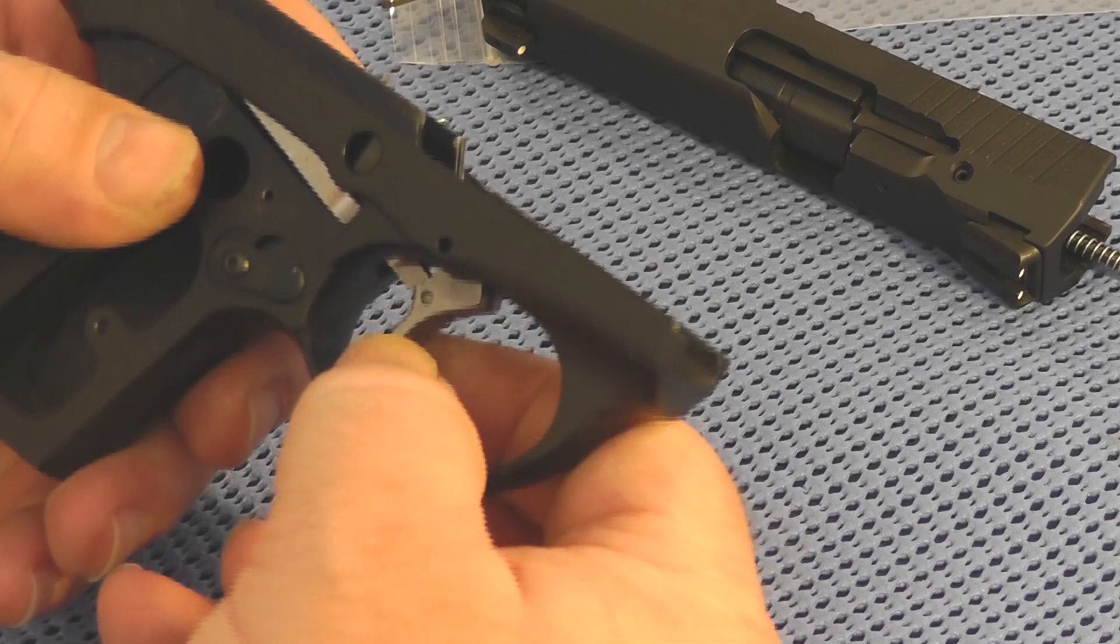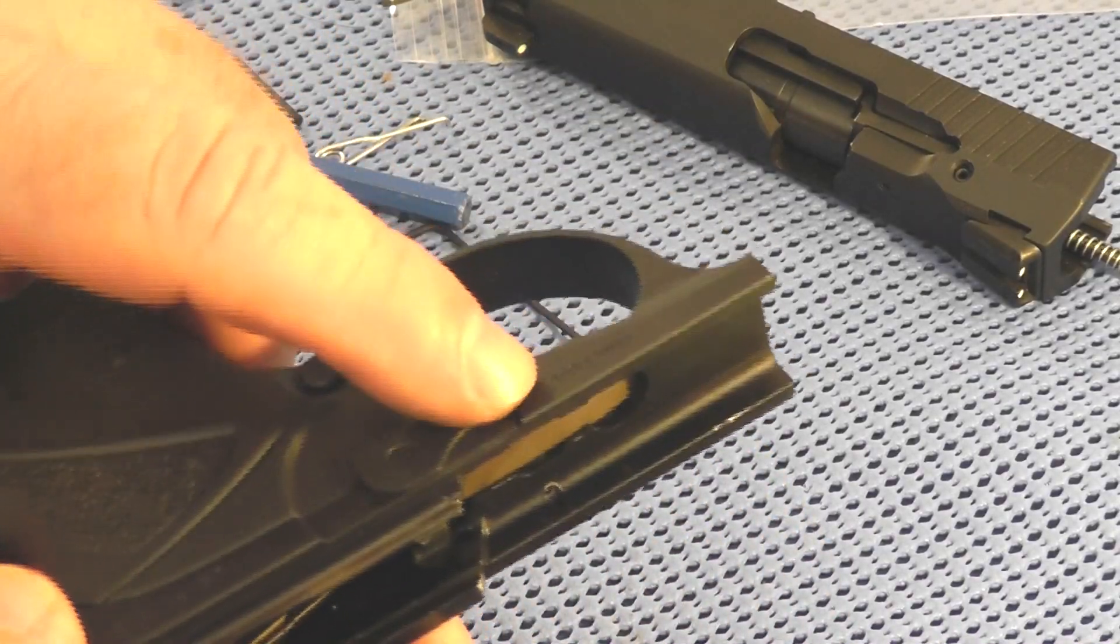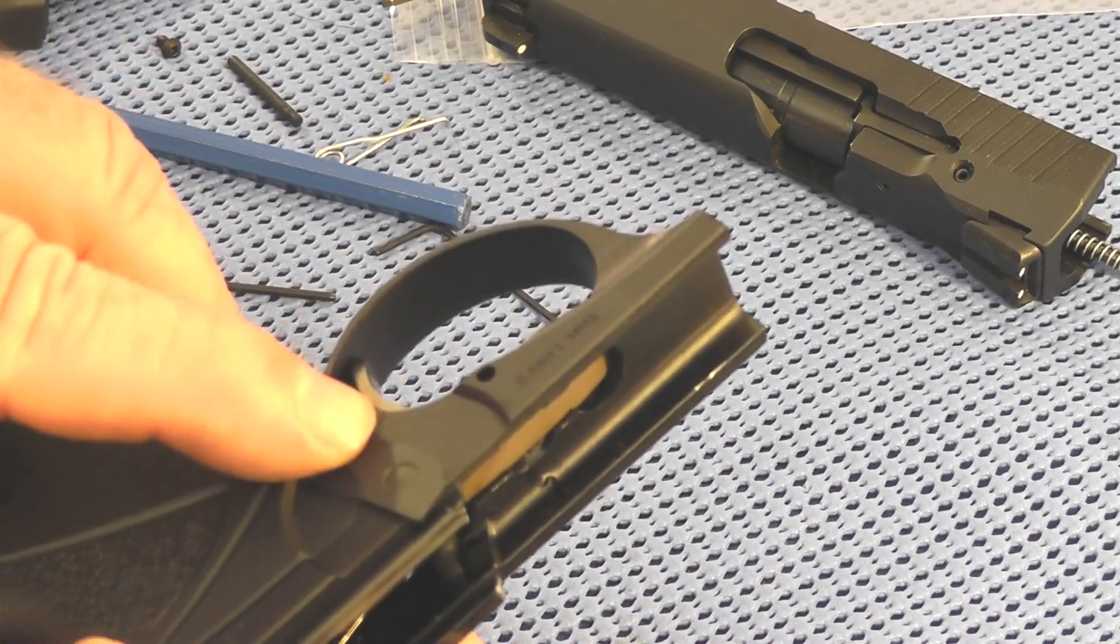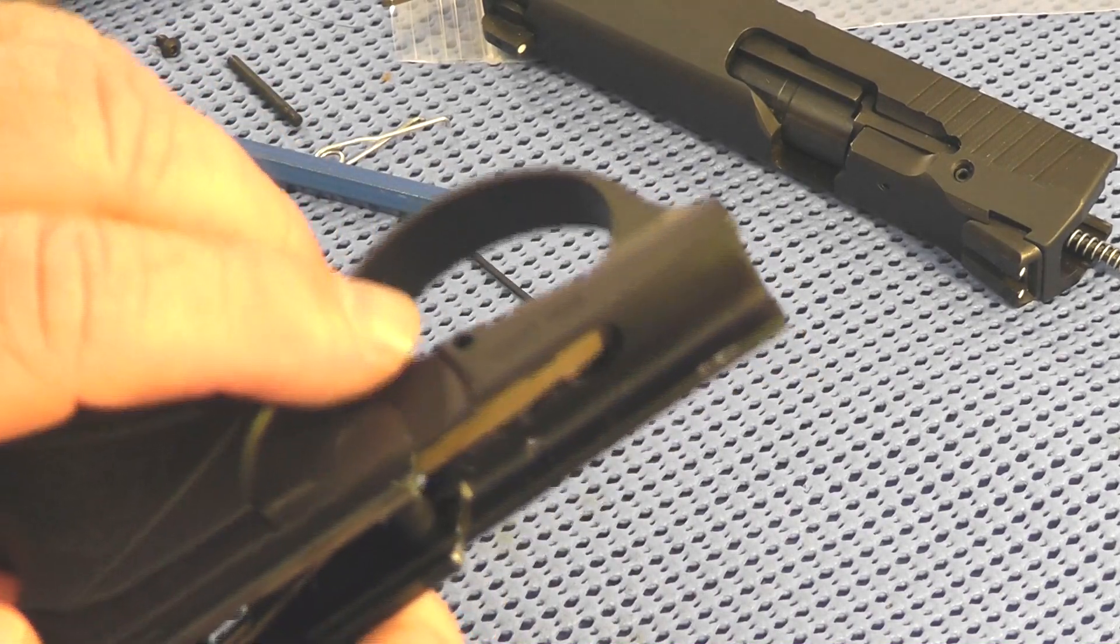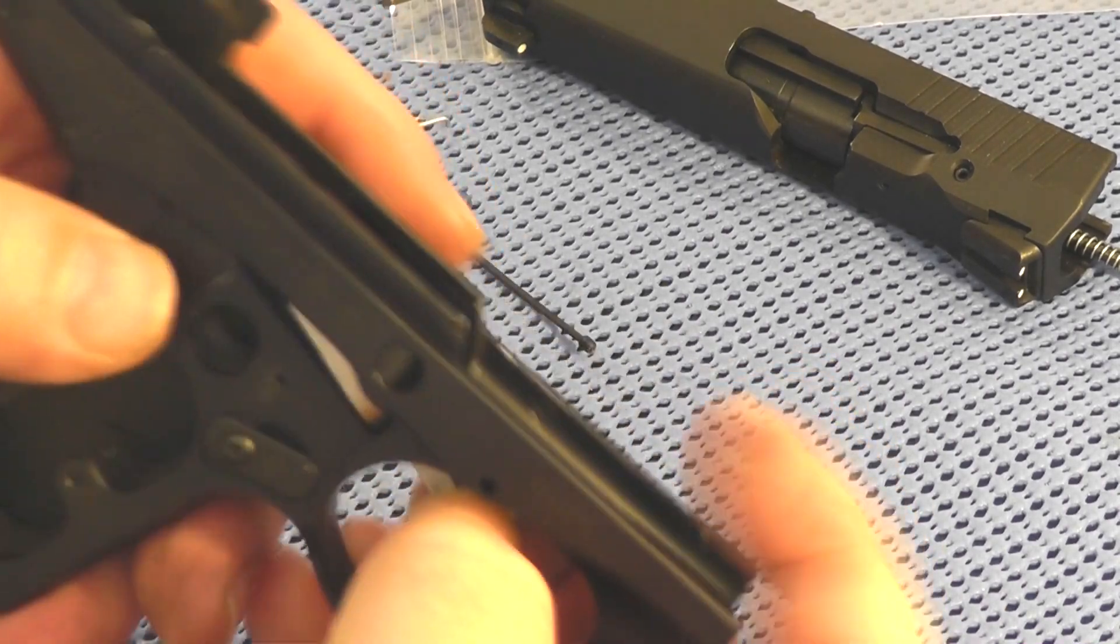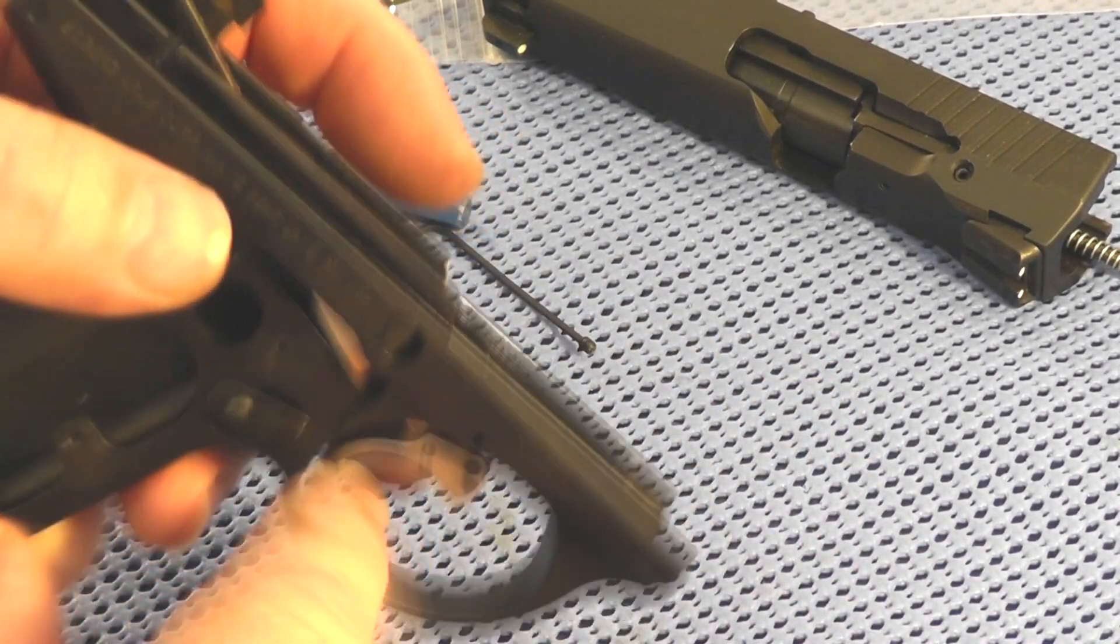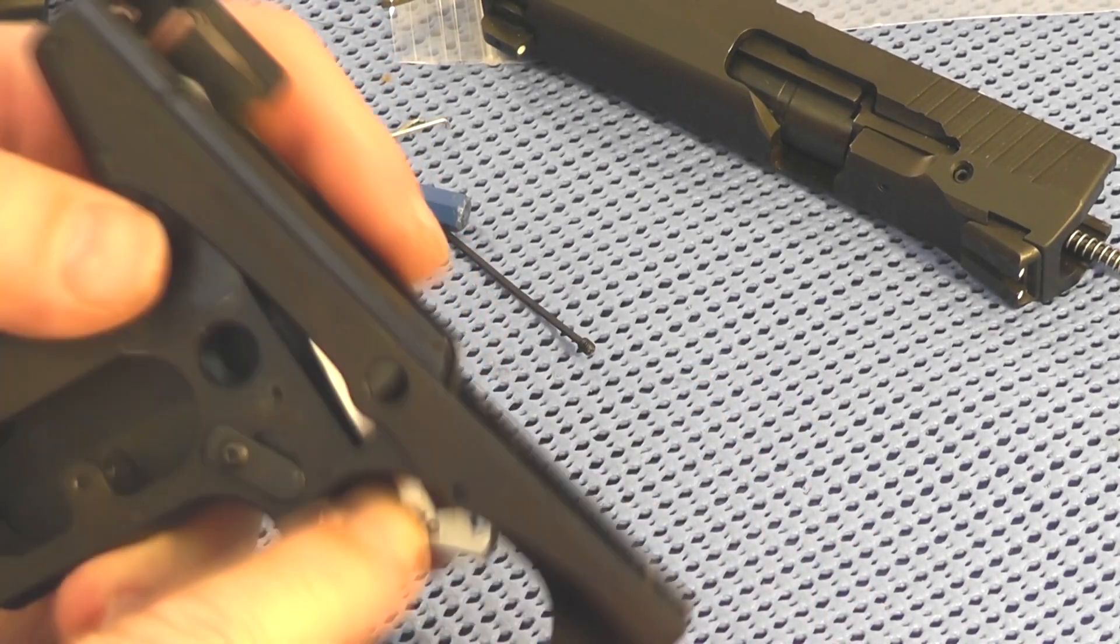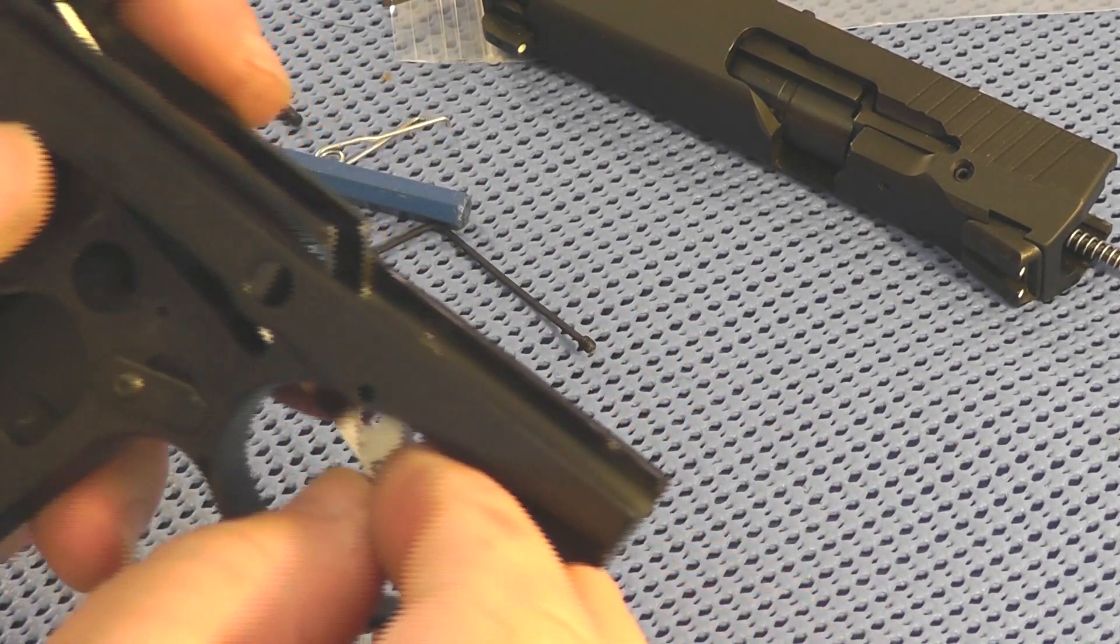This is not as hard as I made it look. You need to turn the takedown lever back in the closed position, and then you can wiggle the trigger out. Again, it's not as hard as I made it look.